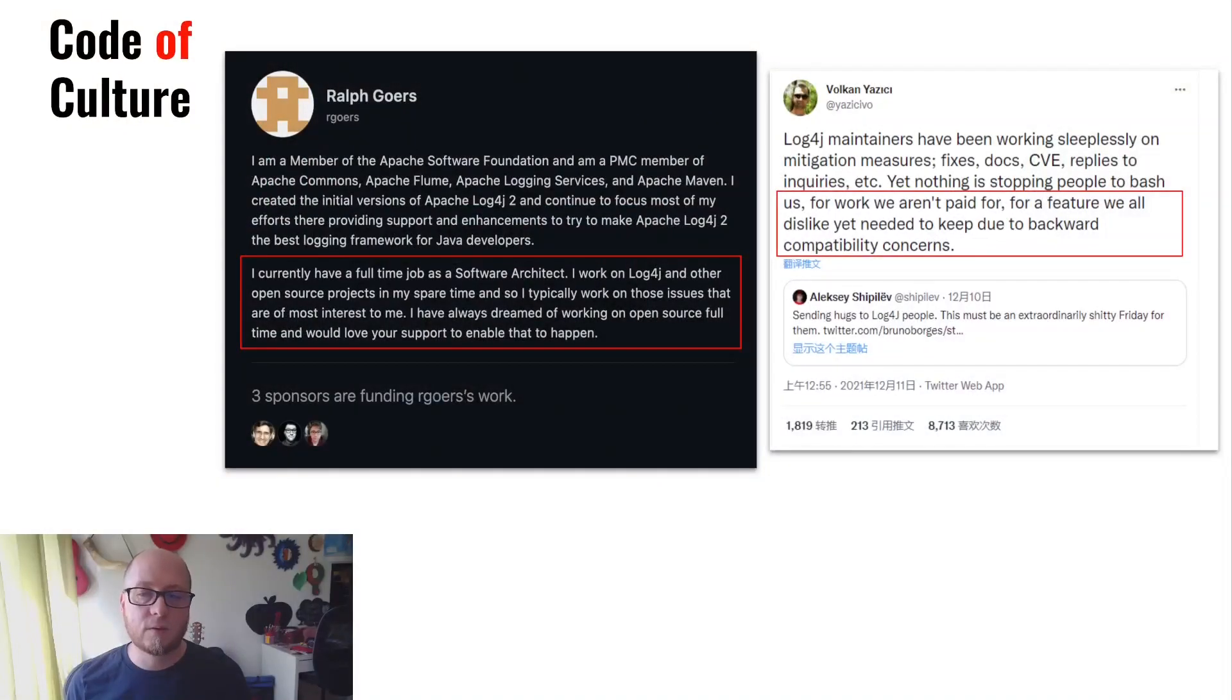In the episode about social classes in the open source, we discussed how there are some open source programmers hired by companies and others that need to contribute in their free time. One of the consequences of this was the log4j security vulnerability. This revealed how companies often rely on open source software, but may not contribute back or pay their maintainers. This raises questions about the sustainability of open source projects and their supply chains. But this was not always like this. Let's see how we got here.